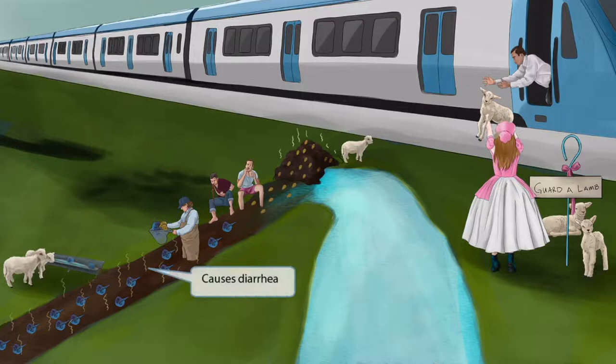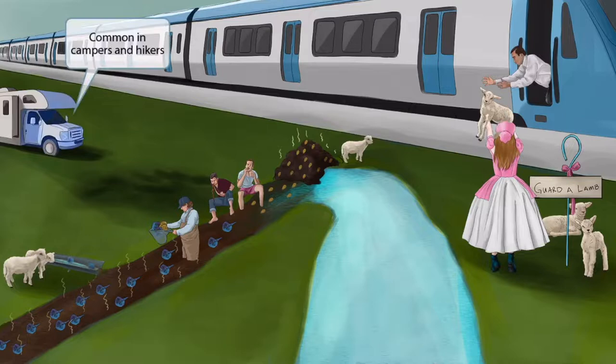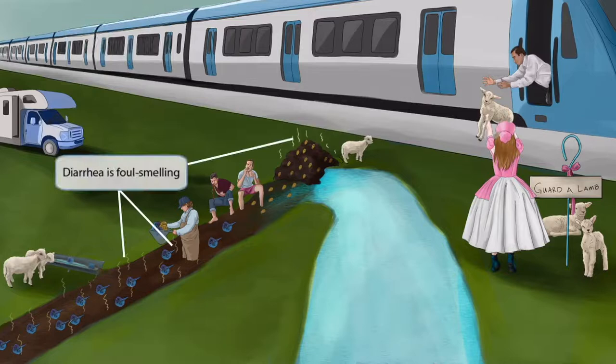Now let's move on to some of the symptoms of Giardia. Looking back at the river, notice that downstream of the poo pile, the river is this poopy brown diarrhea color — this represents the fact that Giardia infections cause diarrhea. This camper represents the fact that Giardia is common in campers and hikers; they need to be careful to not drink natural water without first boiling it, otherwise they can get that nasty diarrhea. Look at those stink lines emanating from the poo in the river — these represent the fact that diarrhea in these patients is foul smelling. Giardia diarrhea is especially foul smelling, not like typical diarrhea.